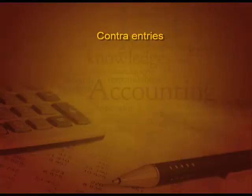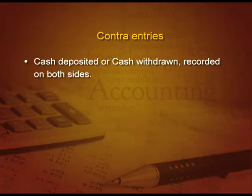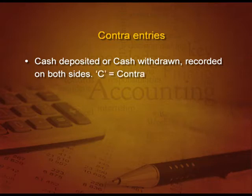Let us talk about contra entries. When we deposit cash or withdraw cash from the bank, it is affected on both sides of the cash book. For example, if I am receiving cash from the bank, the bank column is decreasing on the credit side and the cash column is increasing on the debit side. So in the same cash book there are two effects — one on the debit, one on the credit. This is called a contra entry. We write a capital letter C in the ledger folio column to signify this contra entry, so that we know this entry is going to affect both sides.